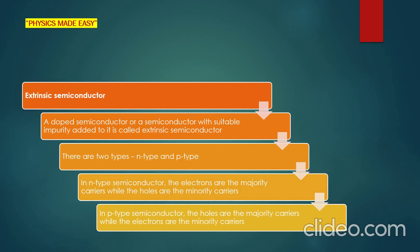Extrinsic semiconductors are not pure. These are semiconductors made by doping a pure semiconductor with an impurity. They are of two types: N-type and P-type. In N-type semiconductor, electrons are the majority carriers while holes are the minority carriers. Whereas in P-type semiconductor, holes are the majority carriers while electrons are the minority carriers. Thank you.